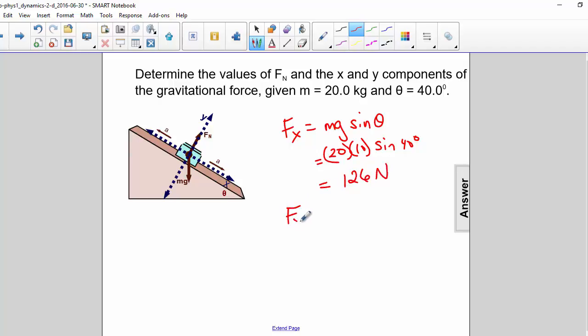Now let's do the y. That is mg cosine theta. So that's 20 times 10 times cosine of 40 degrees. And our answer here is 150 newtons.